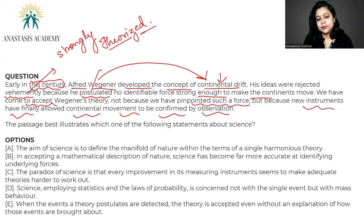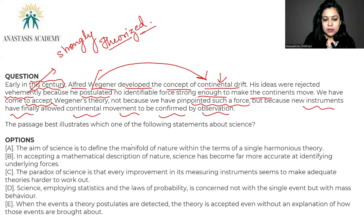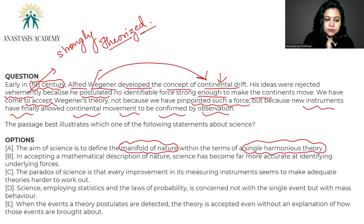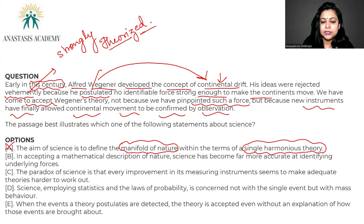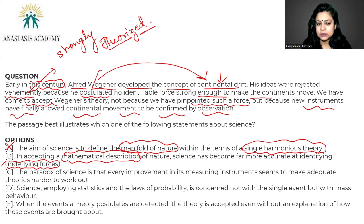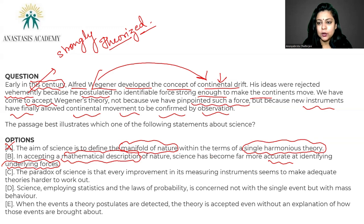Option A: the aim of science is to define the manifold of nature within the terms of a single harmonious theory. 'Manifold of nature' and 'single harmonious theory' are not supported by the passage — option A is gone. Option B: in accepting a mathematical description of nature, science has become far more accurate at identifying underlying forces. We have not found the underlying forces, and mathematical description was not given in the passage. We have still not been able to identify the force behind continental drift — option B is gone.